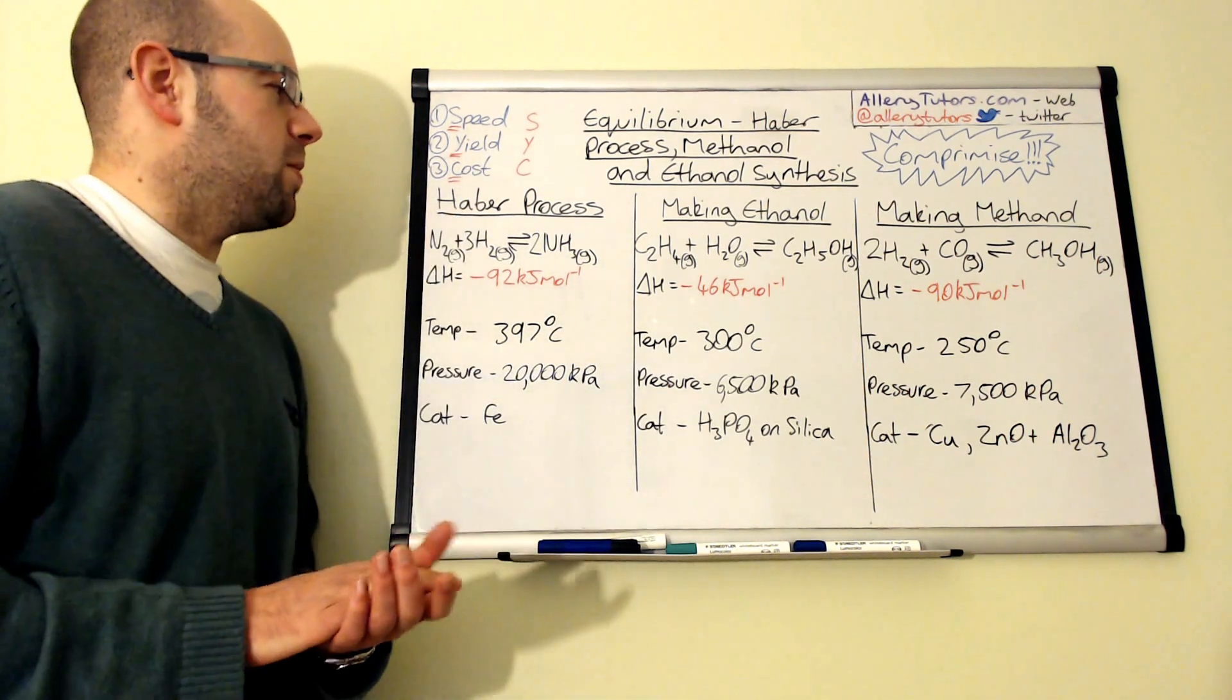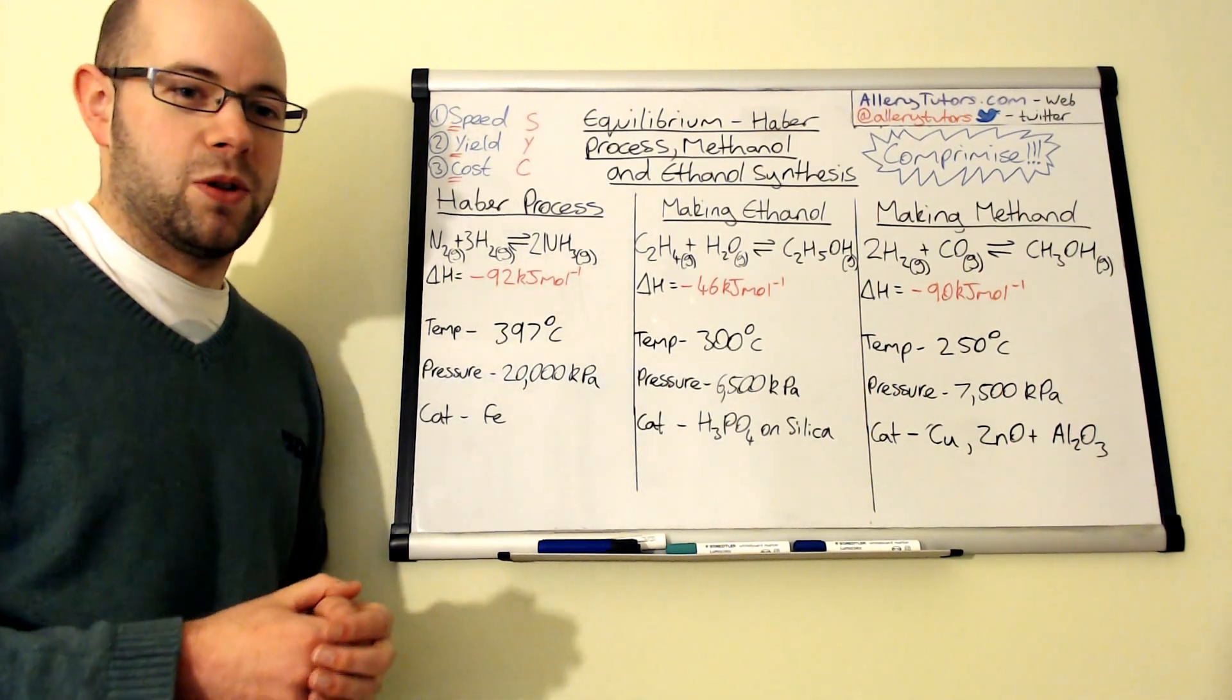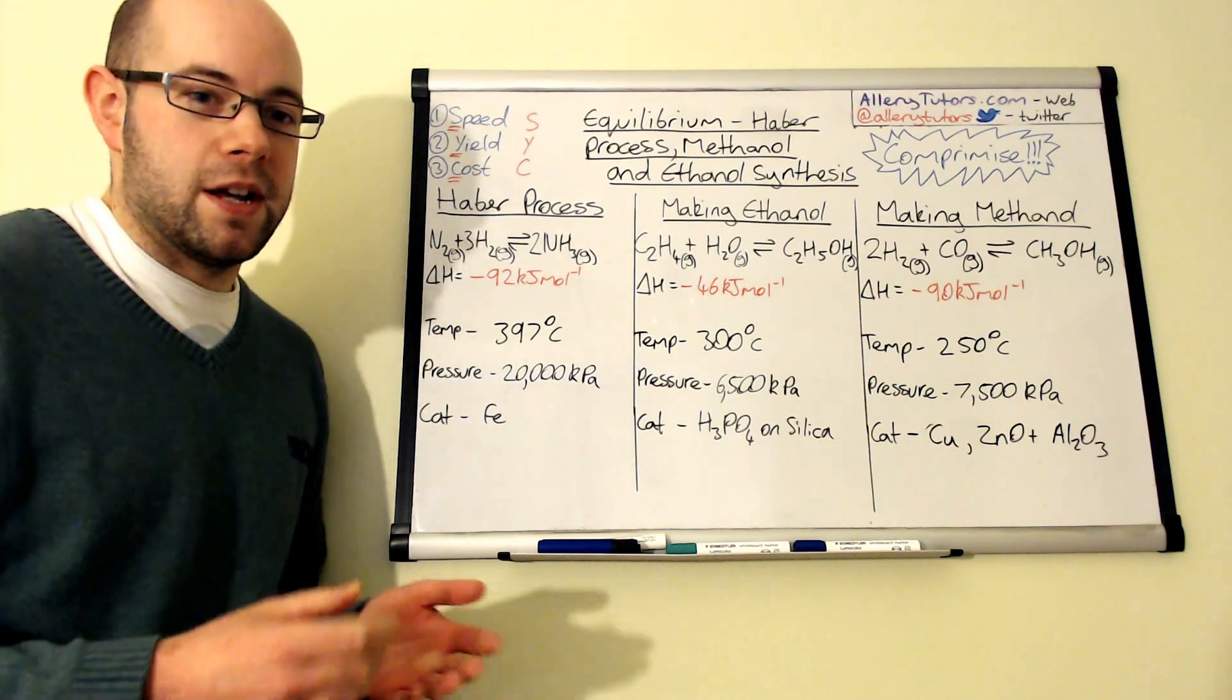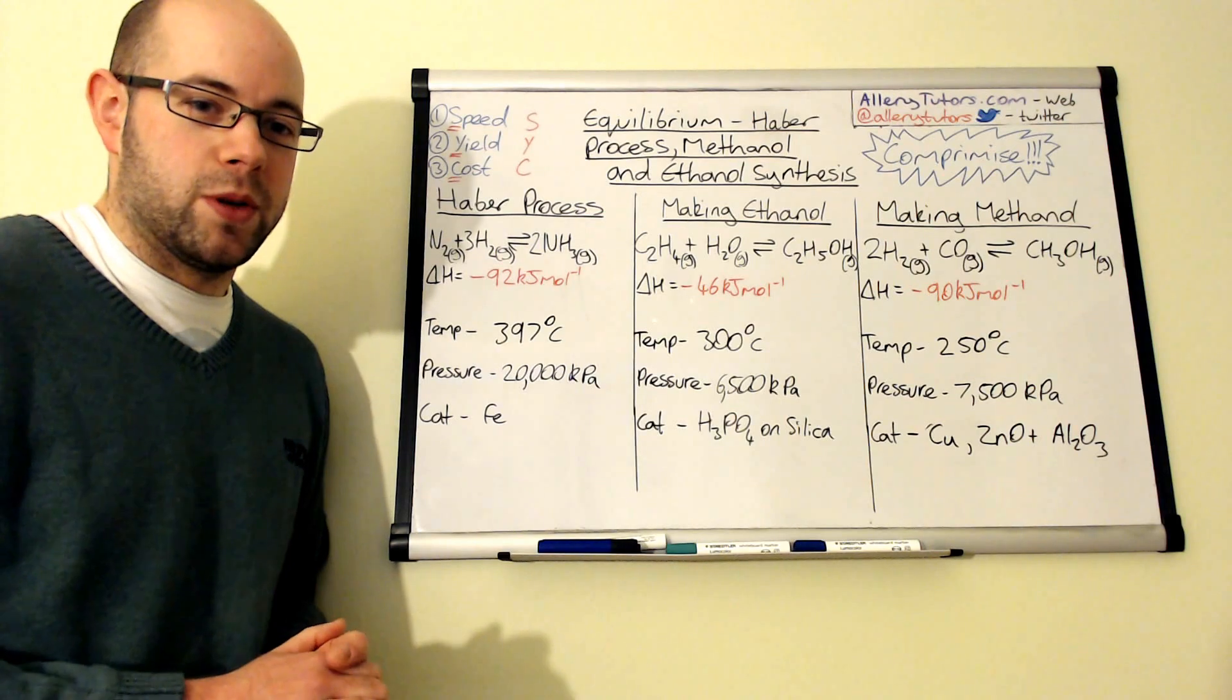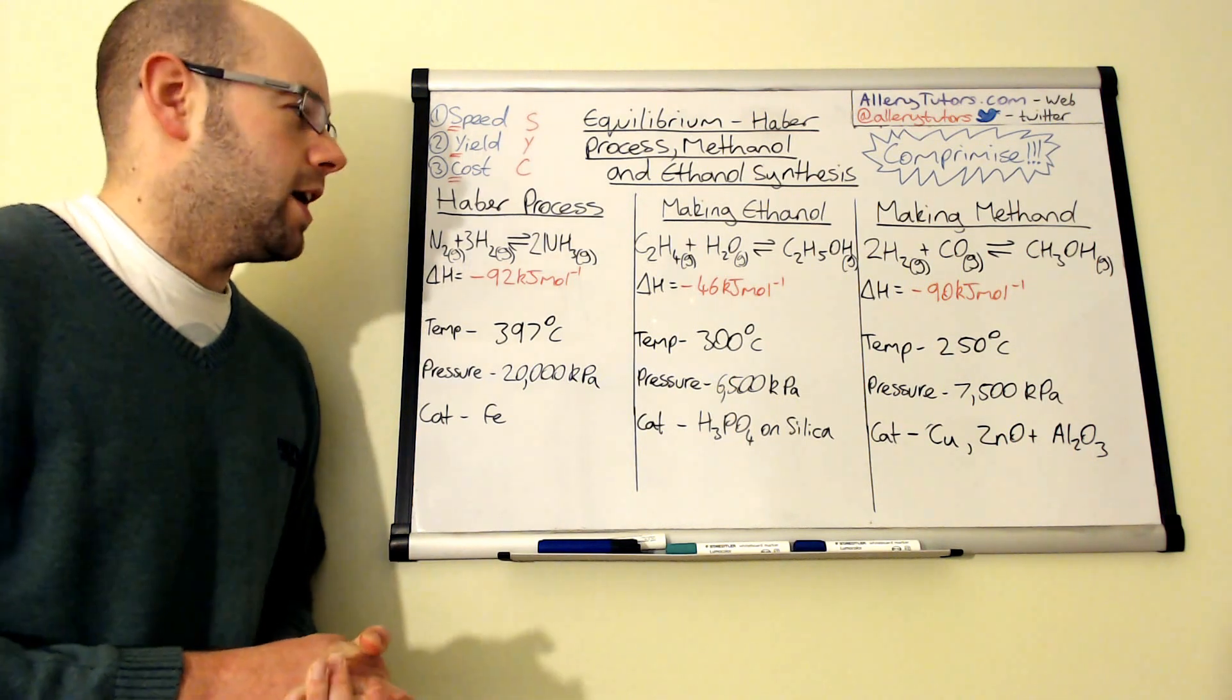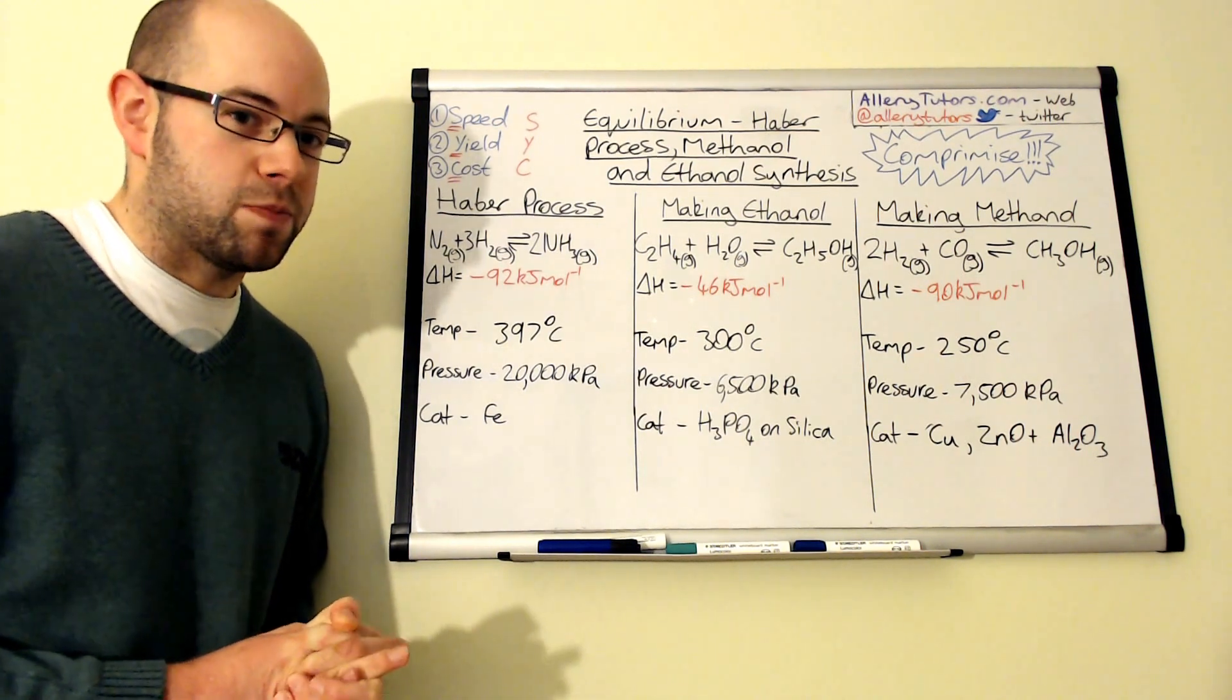We're going to start with the Haber process. This was a process developed in Germany around the first world war by Fritz Haber and Carl Bosch. These two chemists and an engineer came up with this reaction. The reaction actually had sinister beginnings and was initially started obviously at the time Germany was at war.